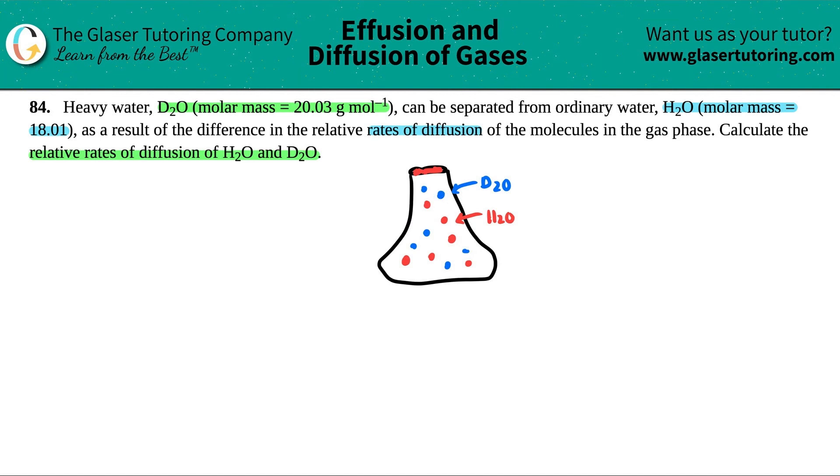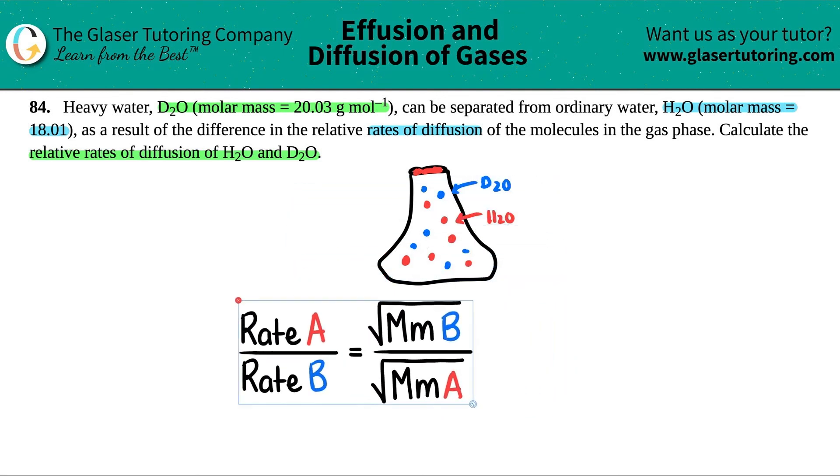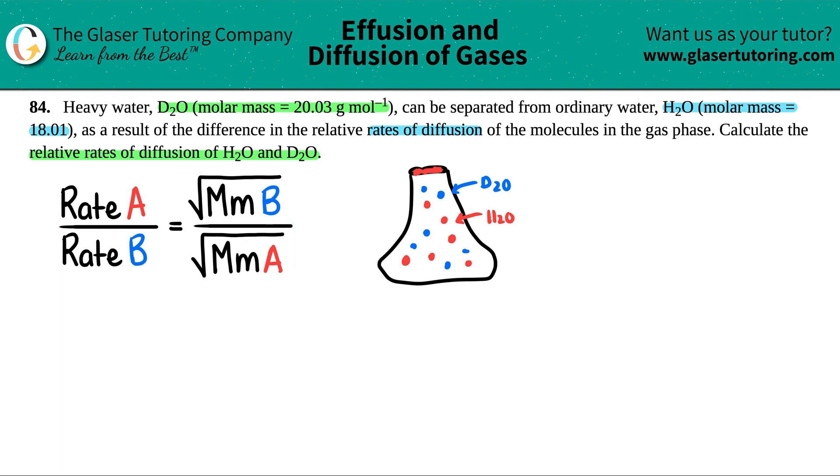Now, this rate of diffusion, or when you're talking about gases with rates, there's one specific formula that we're going to use. It's this formula right here. Now, it may look a little scary, but I promise you it is not. In order to get this correct, all we have to do is just list out our two gases. And when you're using this formula, you're always going to have two different gases.